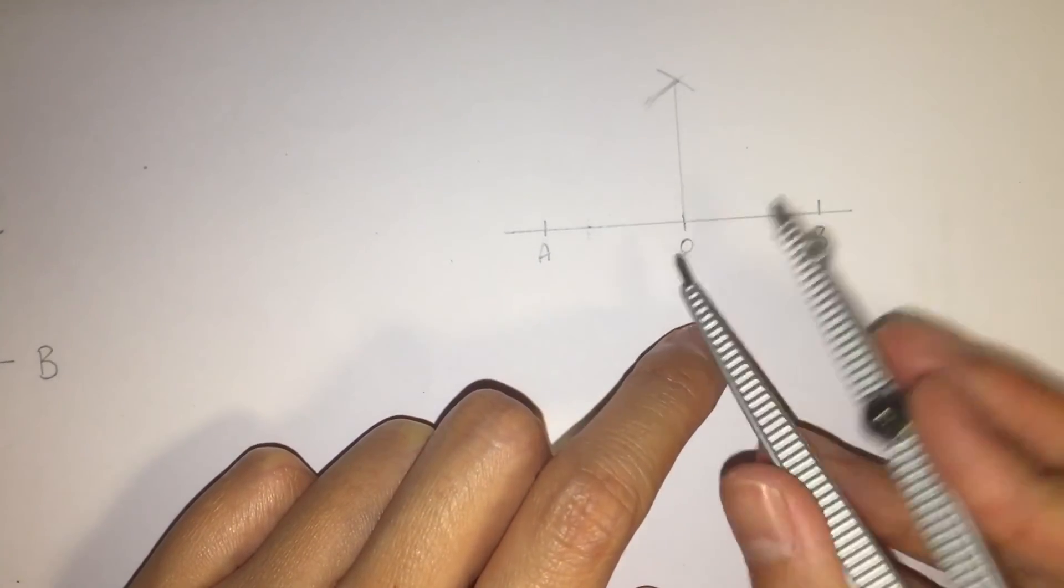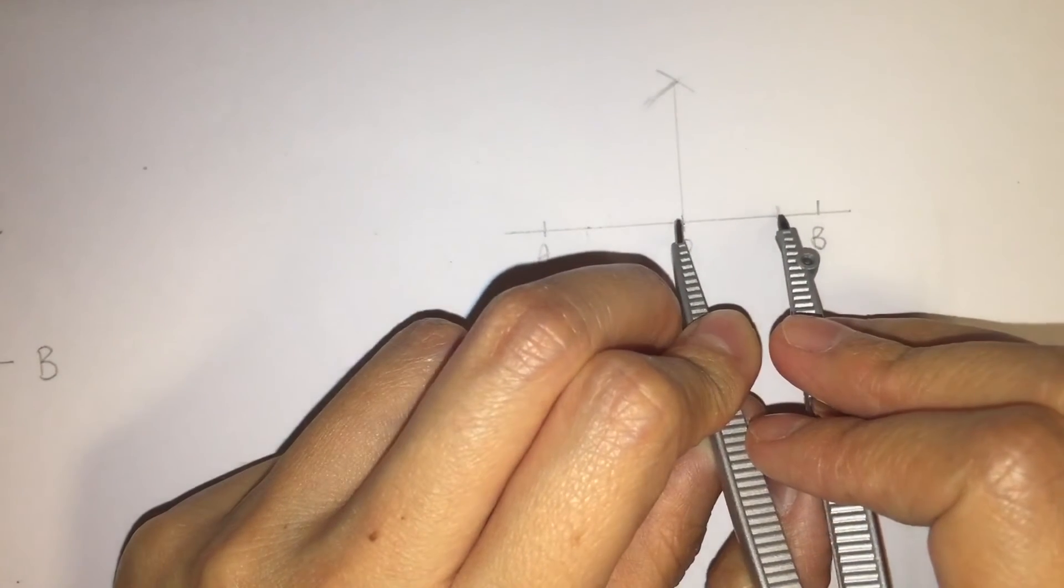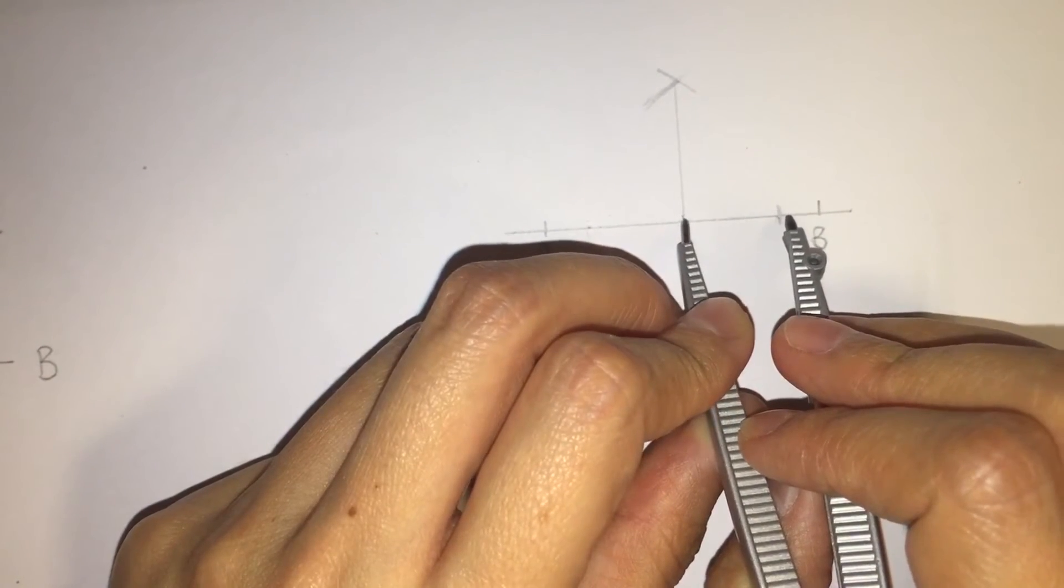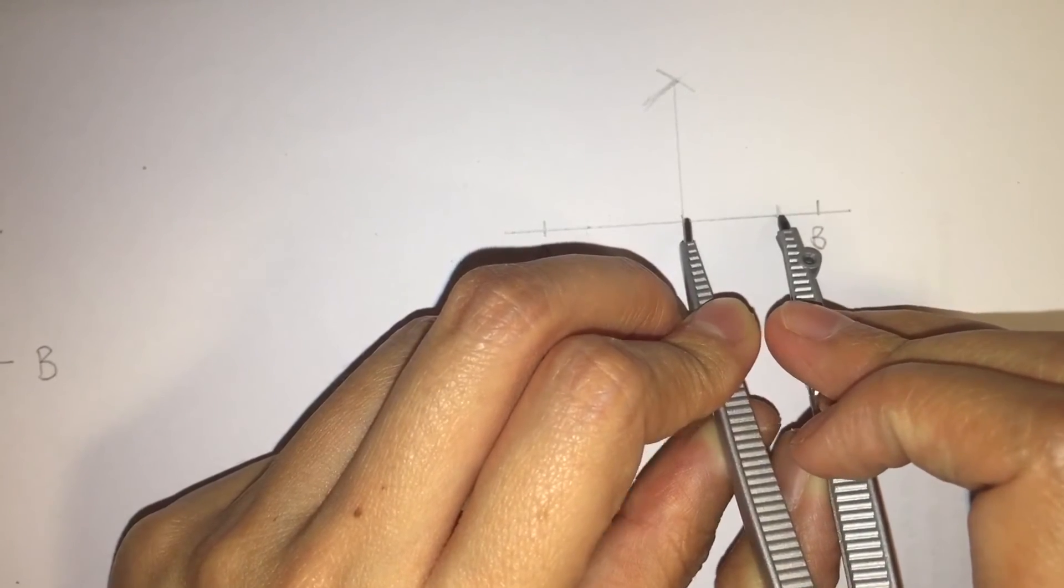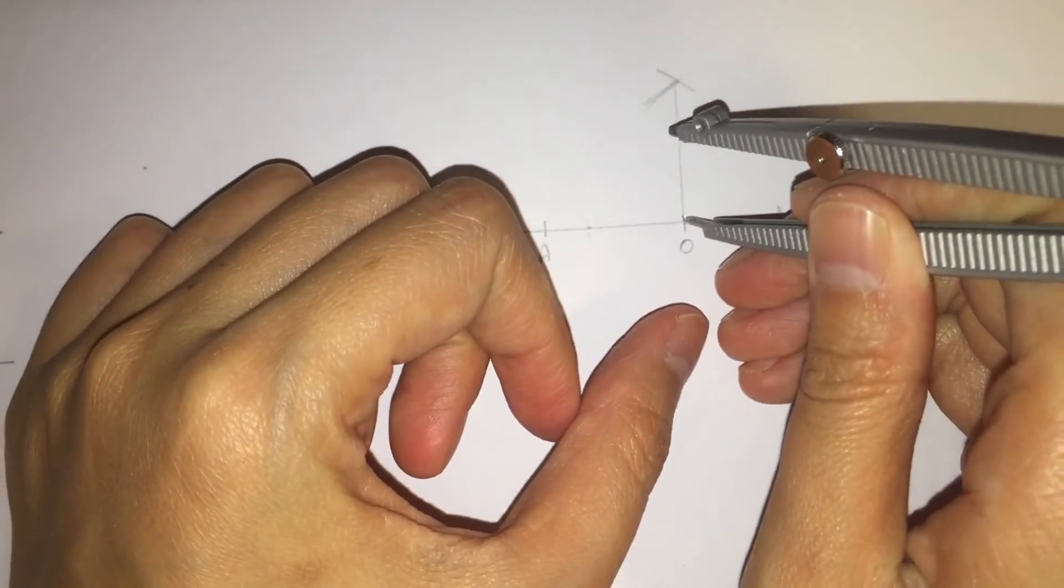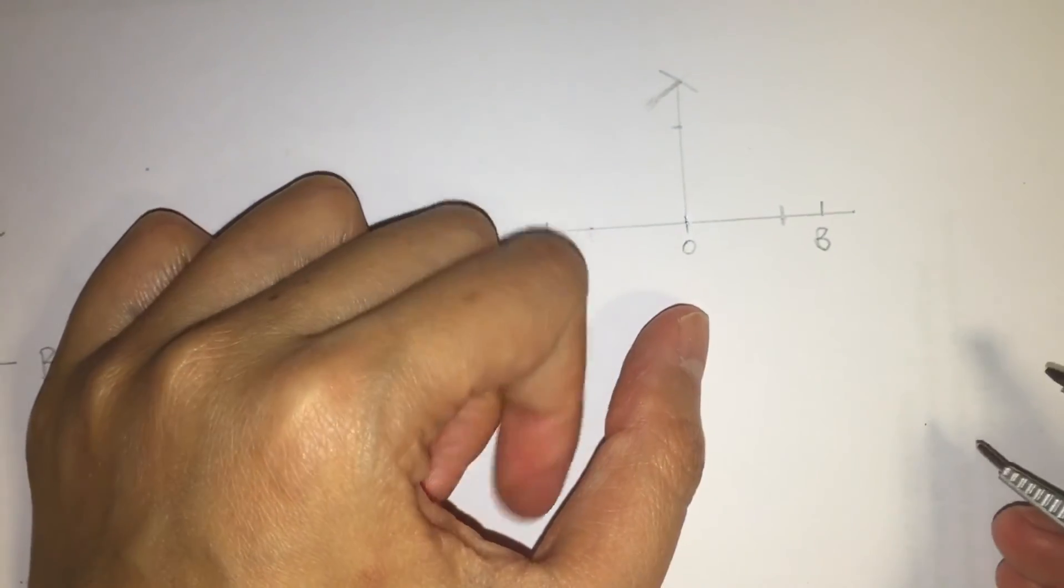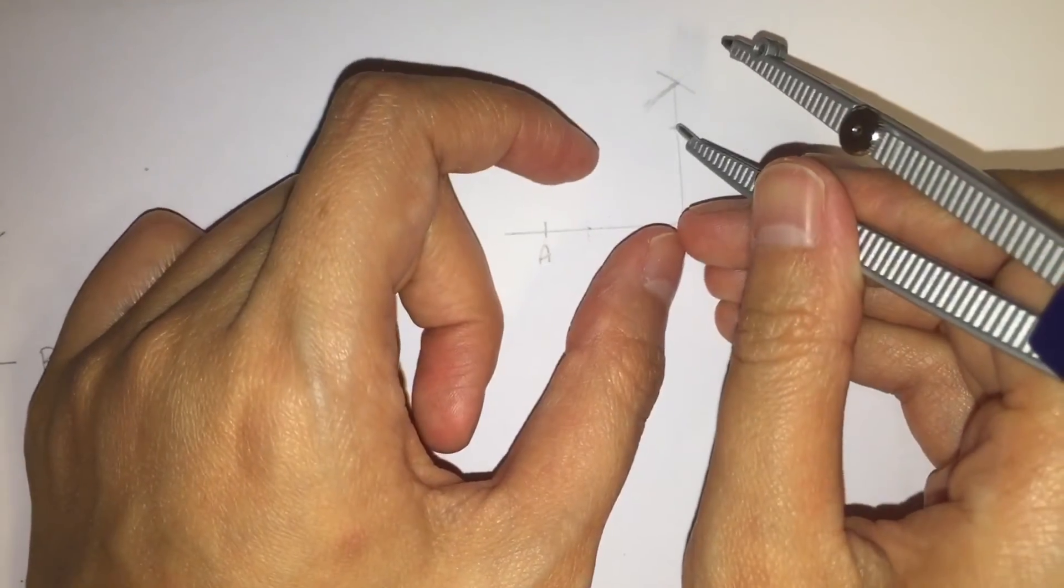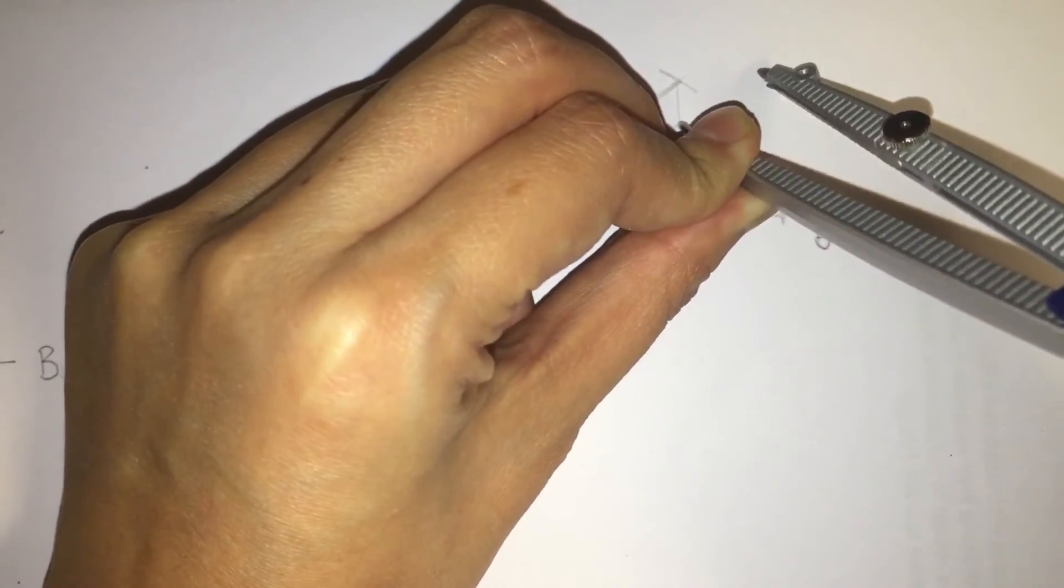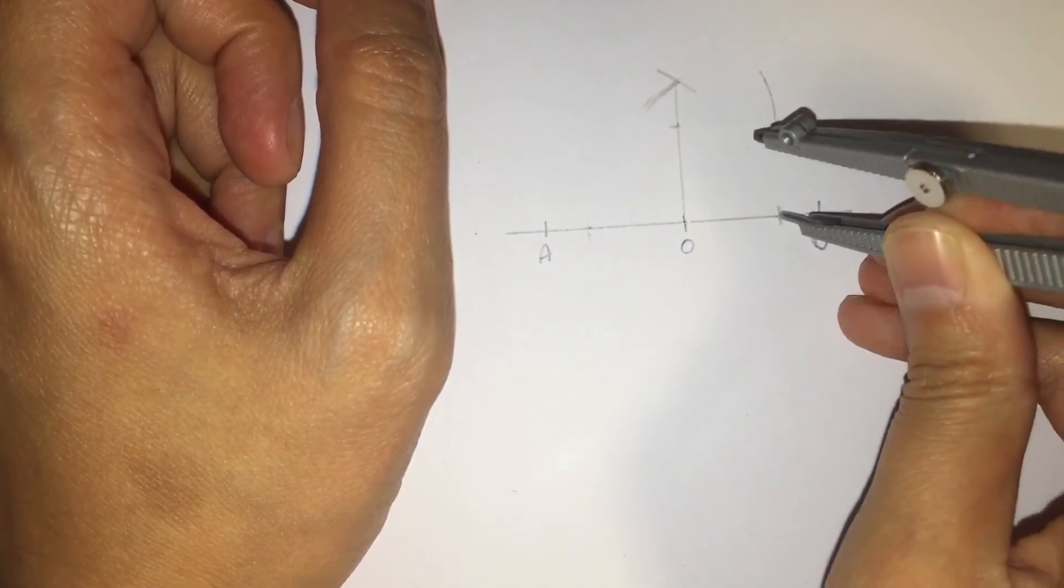we are going to mark it the same length as this point, to bisect the 90 degree angle. From here, we are going to have a mark, and from here, we are going to have another mark.